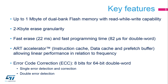The adaptive real-time memory accelerator, with an instruction cache, a data cache, and a pre-fetch buffer, allows linear performance in relation to frequency. The flash memory supports error code correction, or ECC, which is 8 bits long for each 64-bit double word. A single error is detected and corrected. A double error is detected, but not corrected.